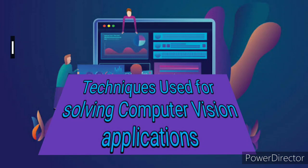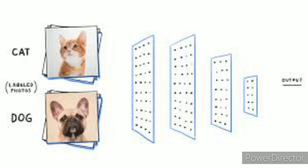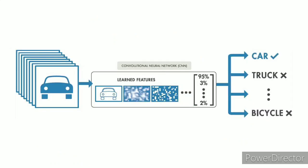Techniques used for solving computer vision applications. 1. Image classification: given a set of images labeled with some category, an image classification model can predict these categories for a new set of test images. The most popular architecture used for image classification is convolutional neural networks (CNNs).